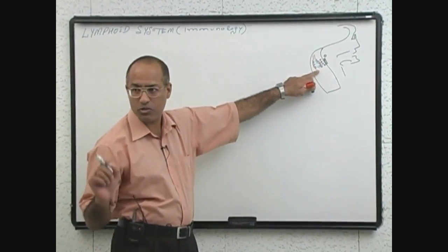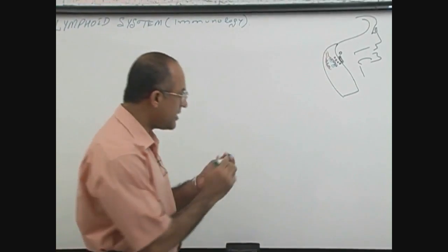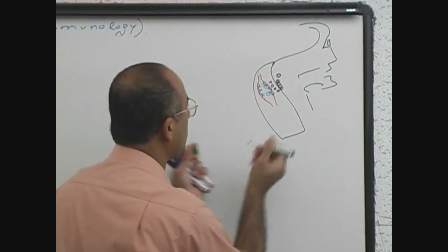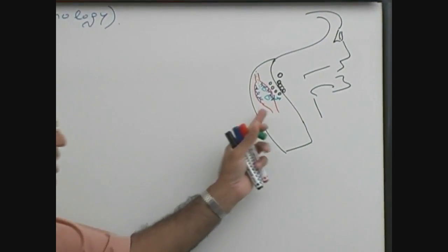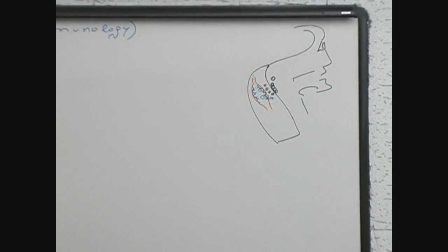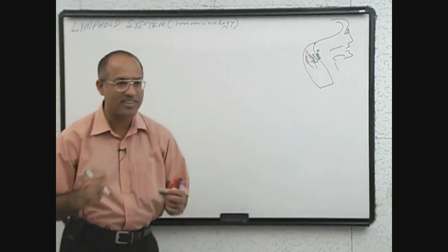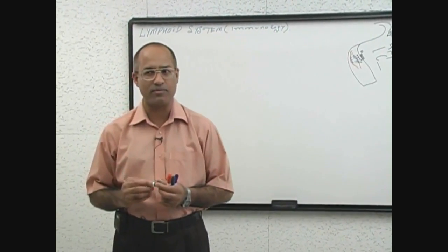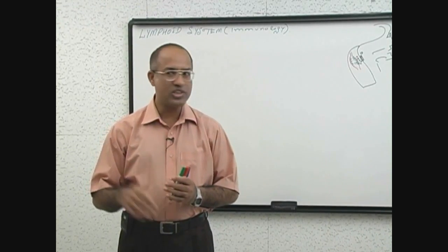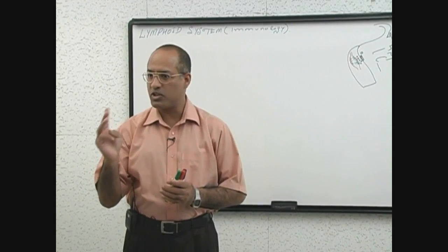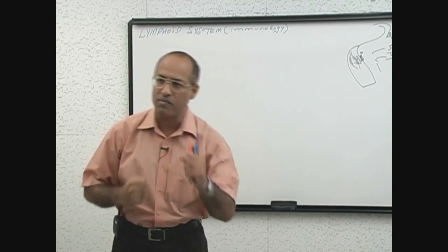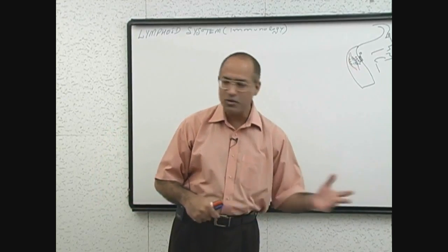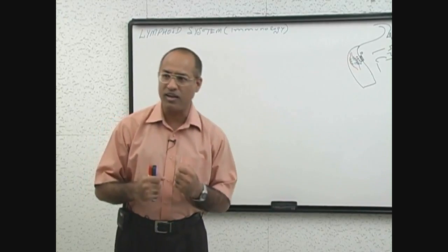White blood cells start sticking to the endothelial cells, and as you will learn when you study inflammation in detail, white blood cells will come out from the vascular compartment into the tissue to fight with the bacteria. Which white blood cells come out first — neutrophils, macrophages, or lymphocytes? Neutrophils come first of all into tissue.